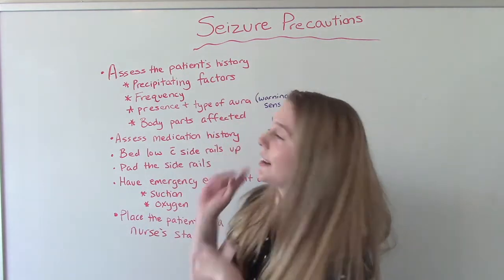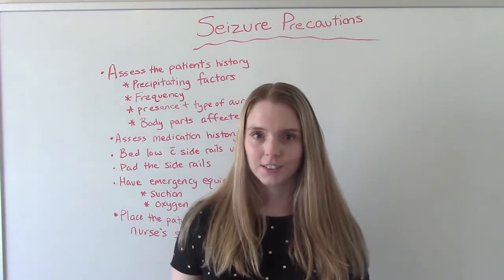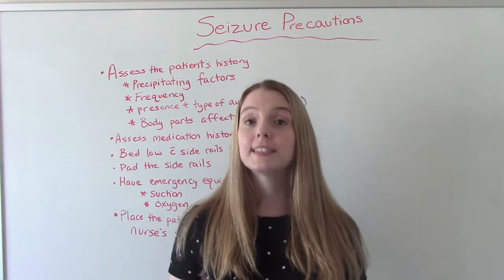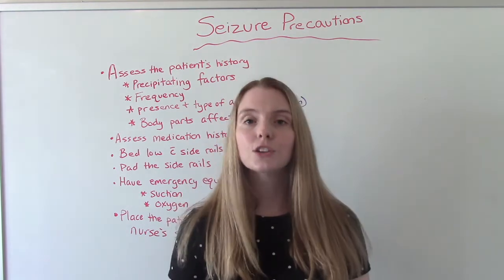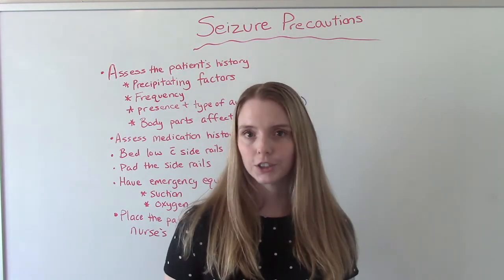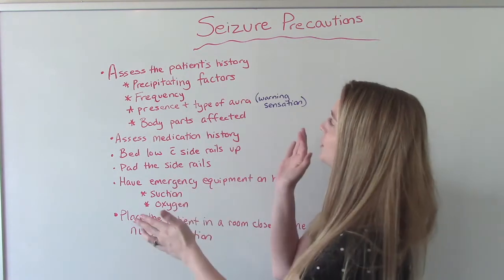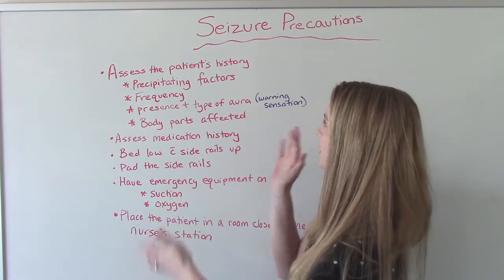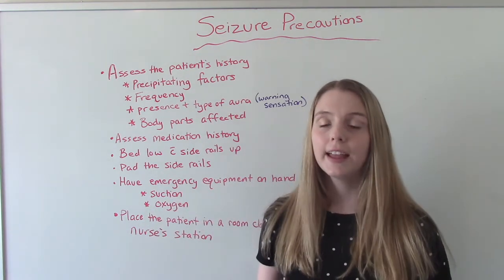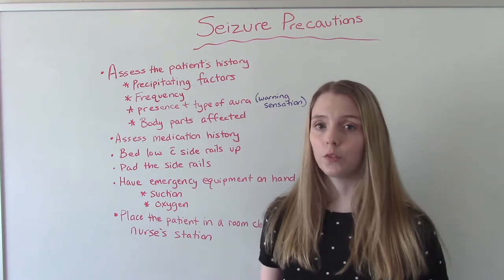This first bit is called seizure precautions. Your patient is at risk for potentially having a seizure, so they are placed on seizure precautions. The first thing we need to do with this patient is get as much information as possible. Gathering a really thorough history is going to be very helpful.